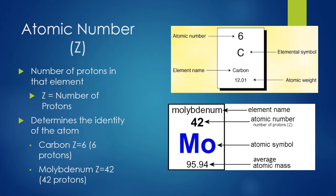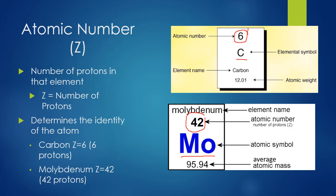Looking at atomic number: on the periodic table, elements are represented by a symbol and an atomic number, usually shown as a whole number above the symbol. For carbon, the symbol is C and the atomic number is 6. That number represents the number of protons — all carbon atoms have 6 protons. If you change the number of protons, you're changing the identity of the element itself. For molybdenum, symbol Mo, the atomic number is 42, meaning all molybdenum atoms have 42 protons.